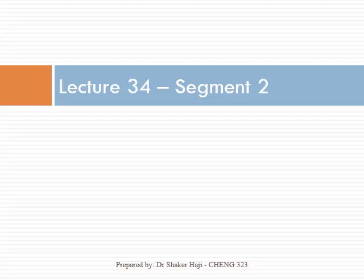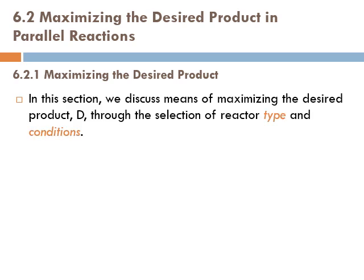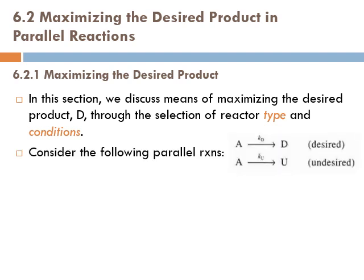Let's continue lecture 34. We're going to talk about maximizing the desired product in parallel reactions. In this section we discuss means of maximizing the desired product D through the selection of reactor type and conditions. Consider the following parallel reactions: A goes to D, which is our desired product, and A goes to U, the undesired product.